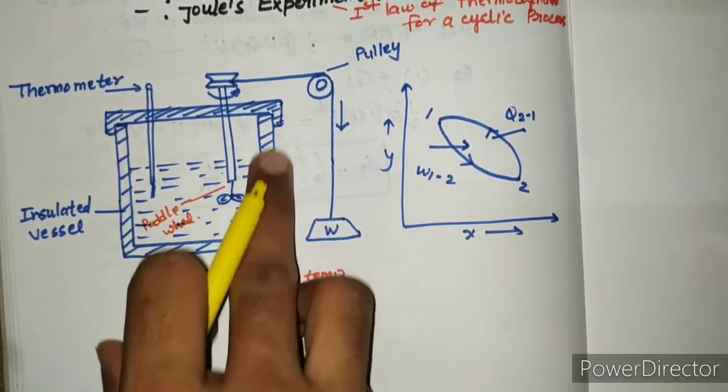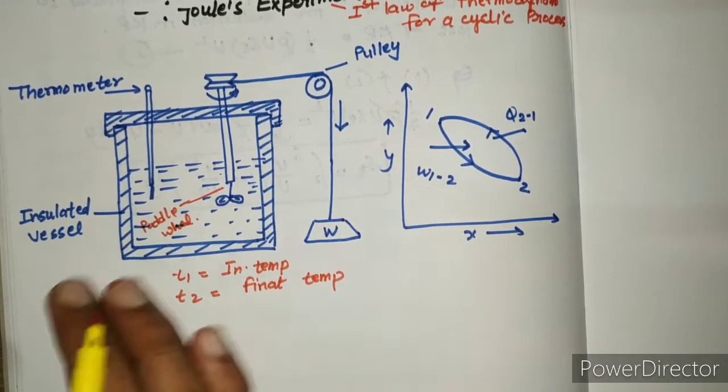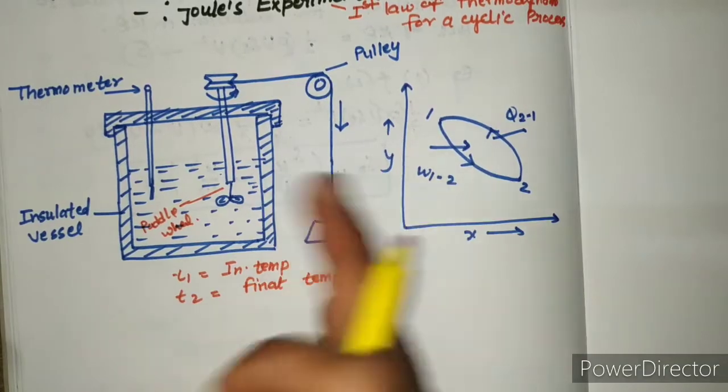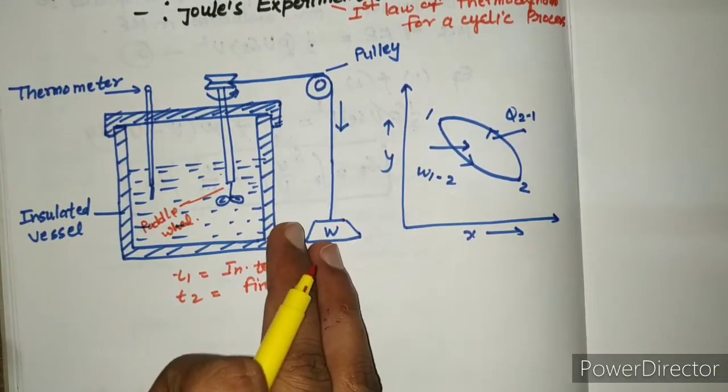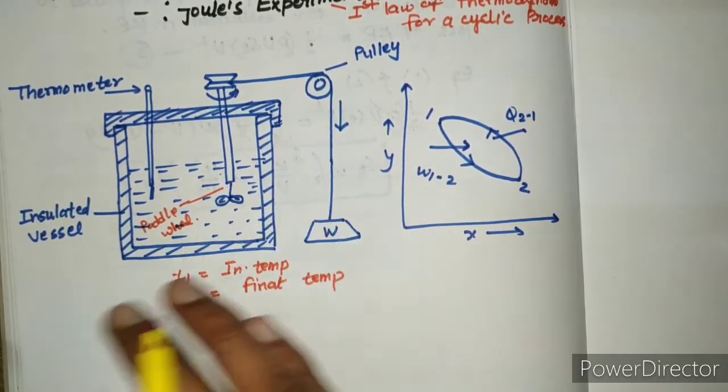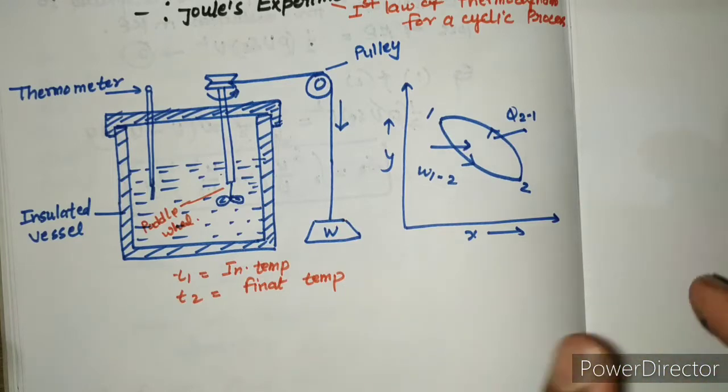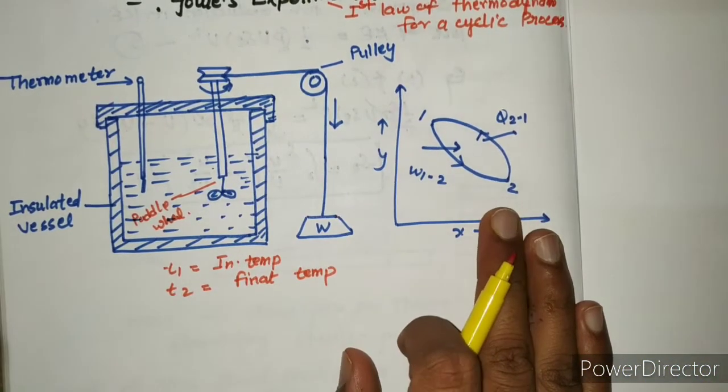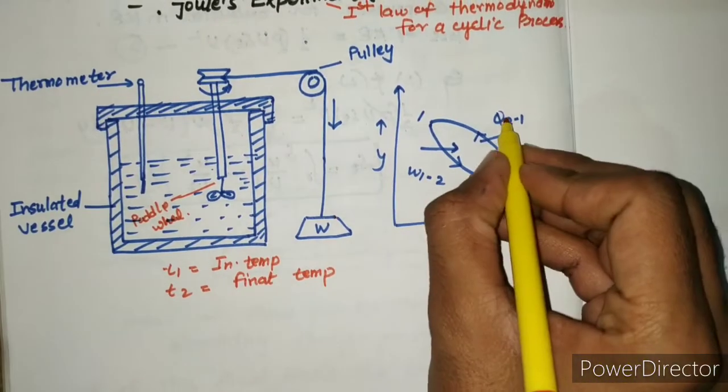When the insulated vessel is removed, then heat will be interactive between system and surrounding. Then after some time, the heat will be equal. This is called thermal equilibrium when heat transfer is shown.